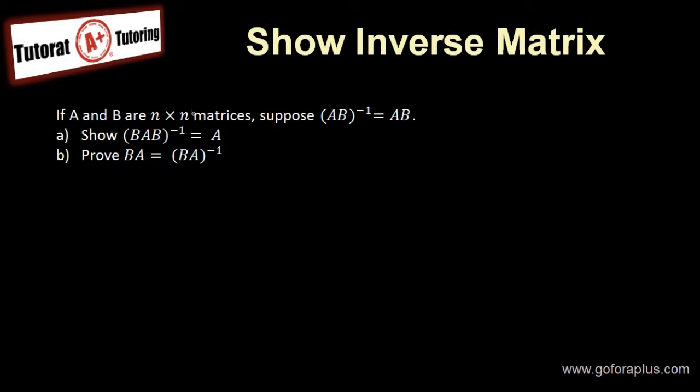If A and B are both square matrices, suppose that I have AB inverse equals to AB. Now I want to show in question A that BAB inverse is equal to A.